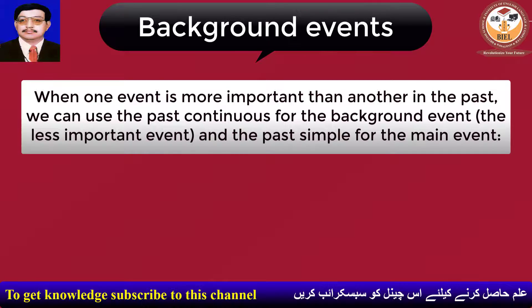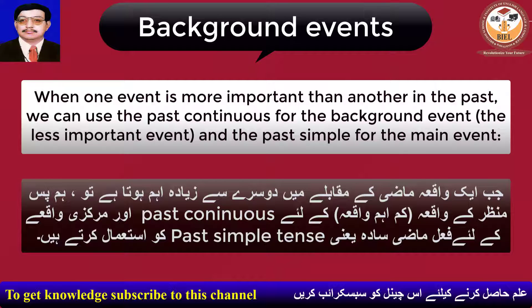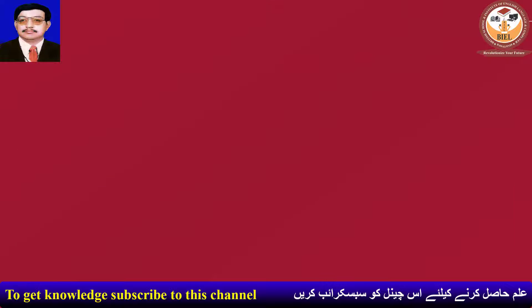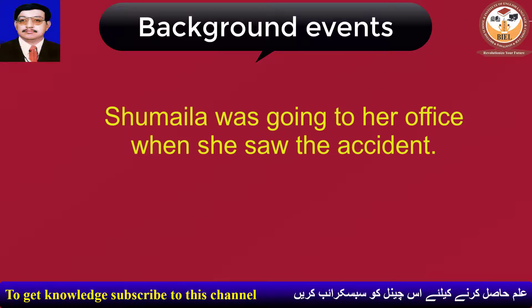When one event is more important than another in the past, we can use the Past Continuous for the background event — the less important event — and the Past Simple for the main event. For example: Sharmila was going to her office when she saw the accident.